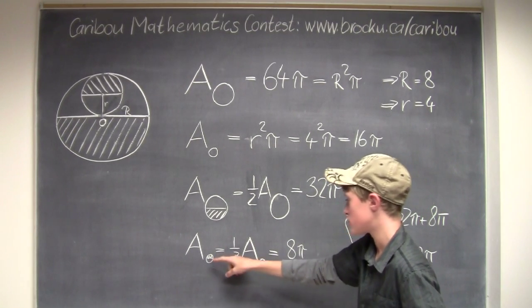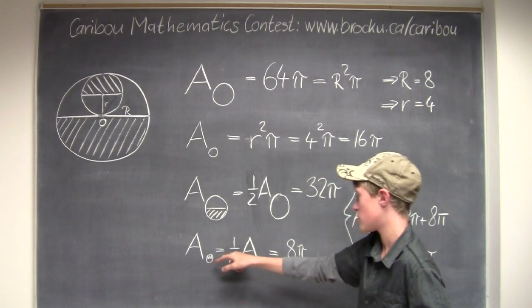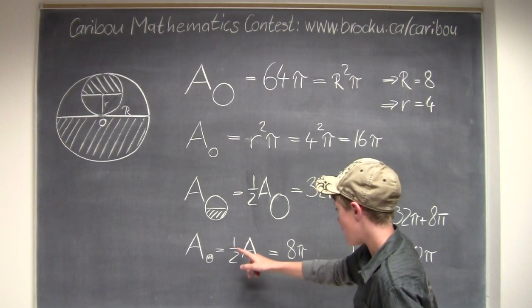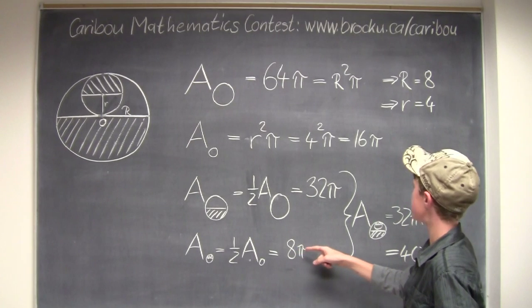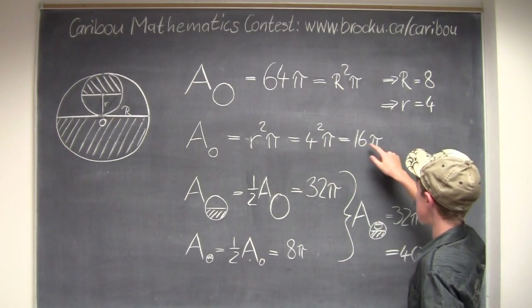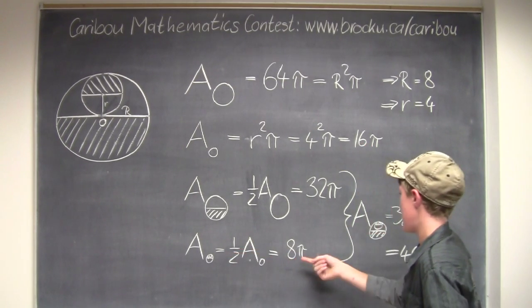Now we look at the shaded region of the smaller circle, which would be half of the area of the smaller circle, which would be 8 times pi, because it would be 16 times pi divided by 2.